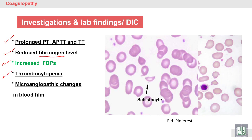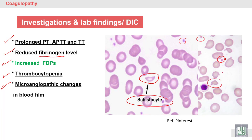Thrombocytopenia occurs due to consumption of platelets — very few platelets remain, showing decreased platelet count. On the blood film you can also see microangiopathic changes with fragmented red blood cells, known as schistocytes.